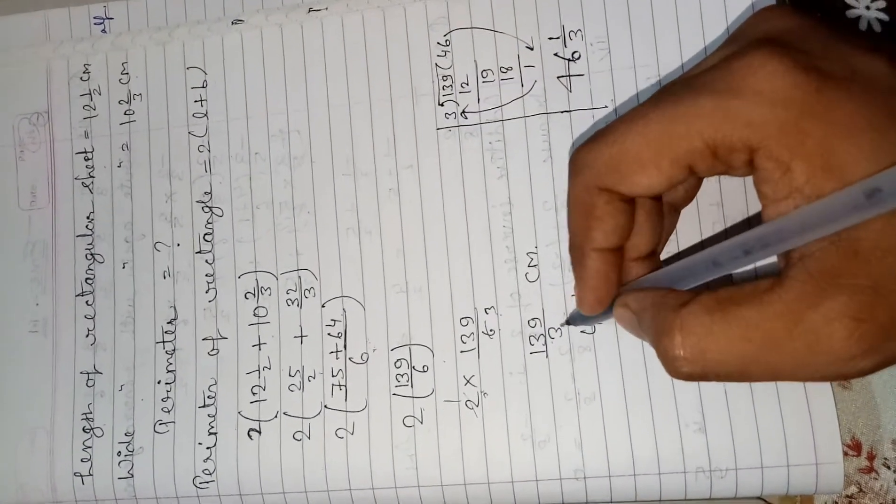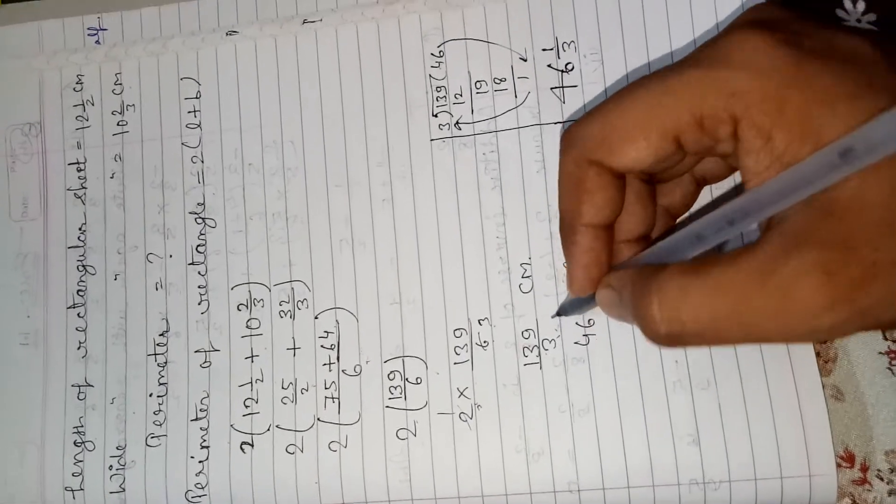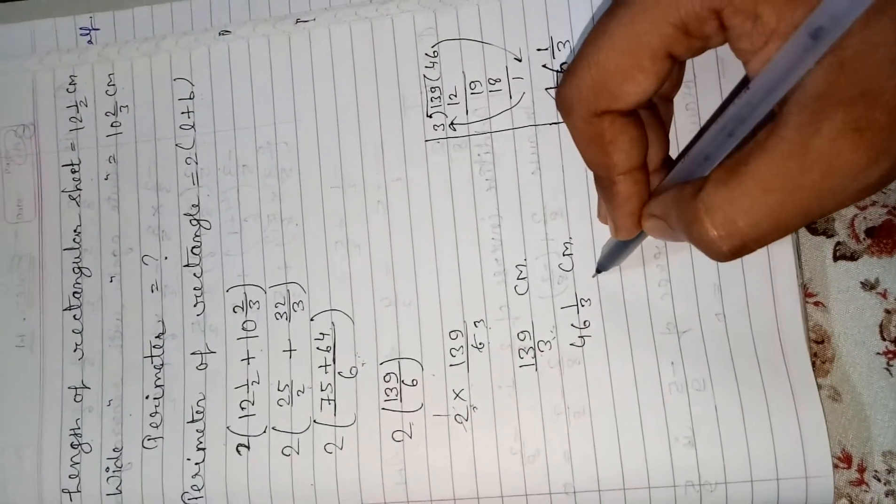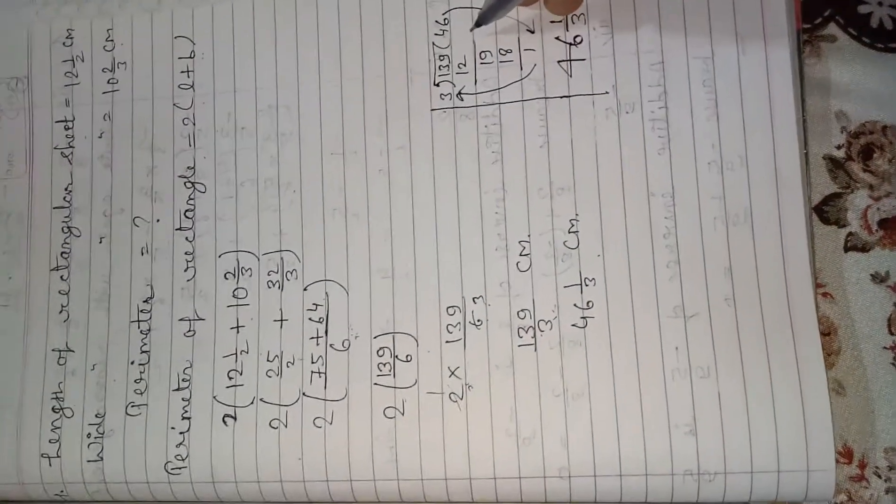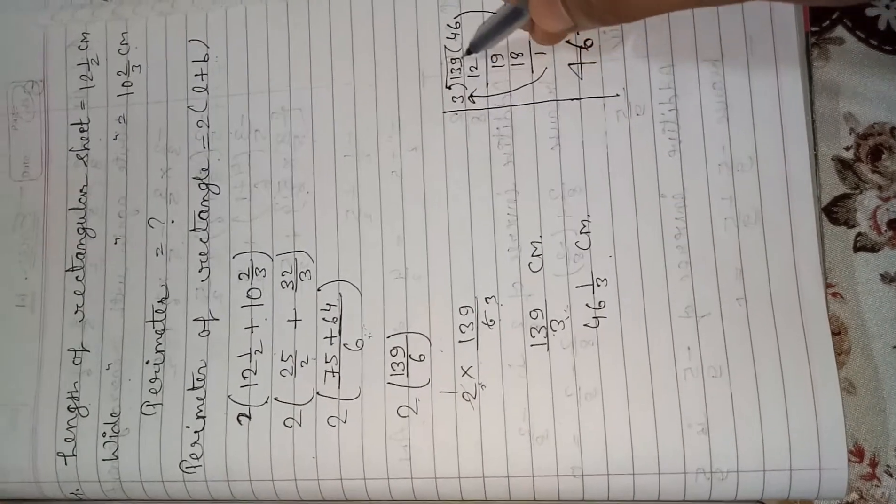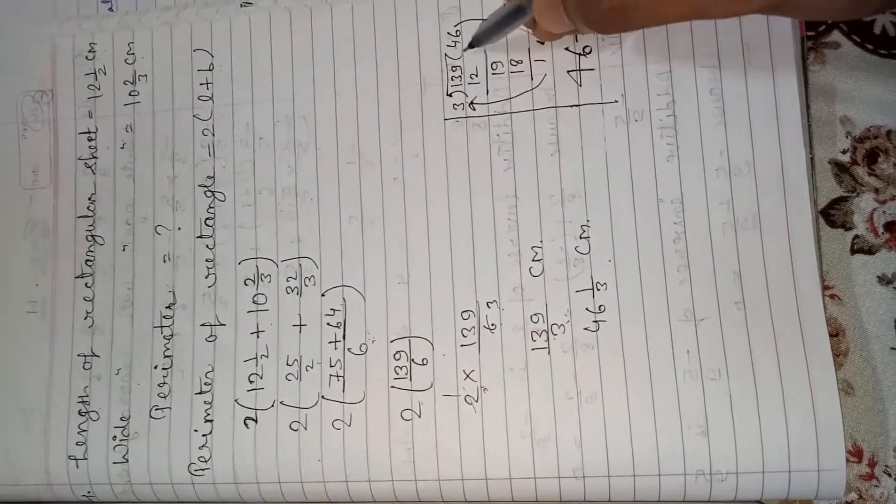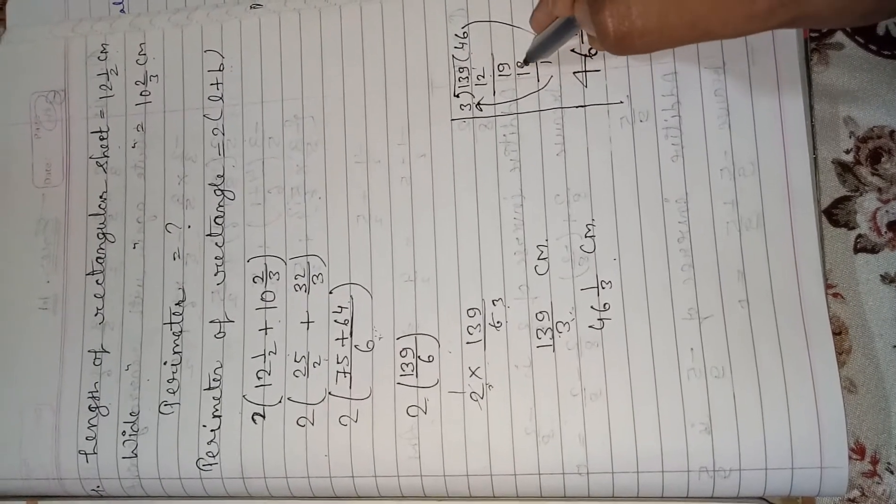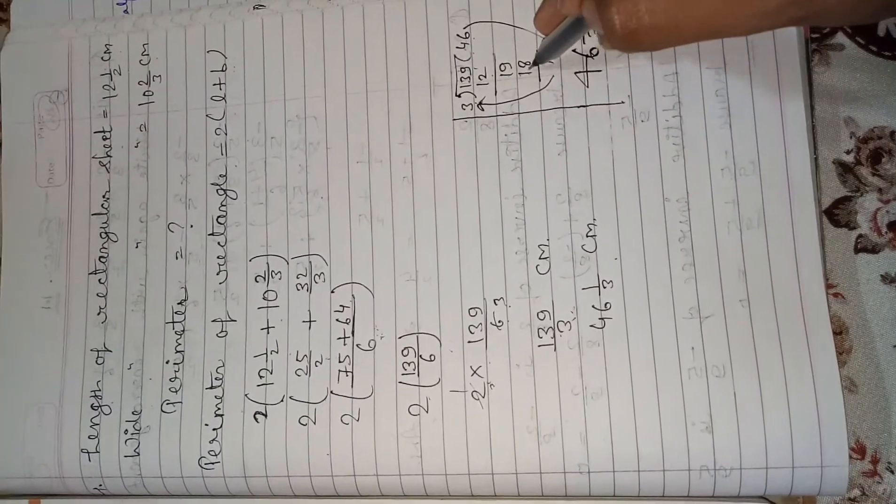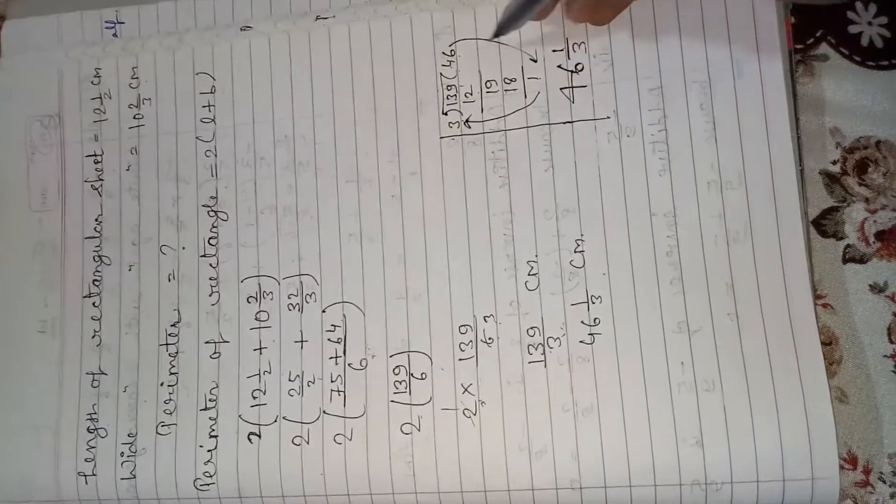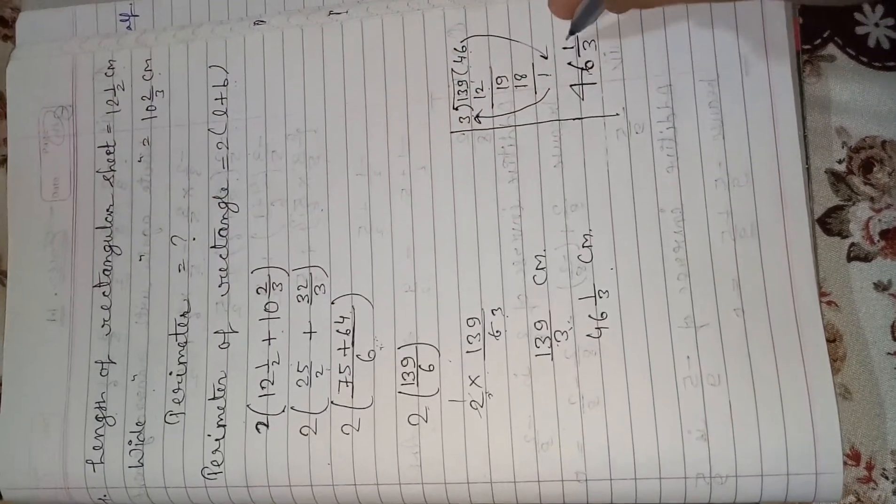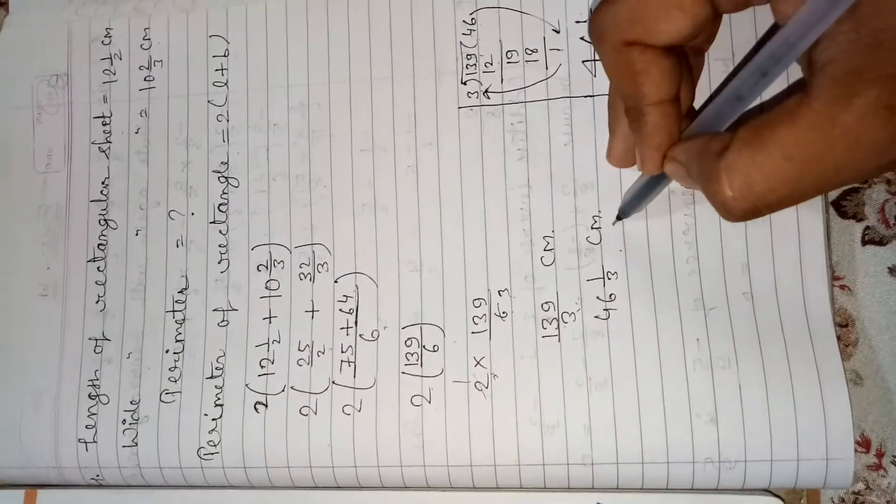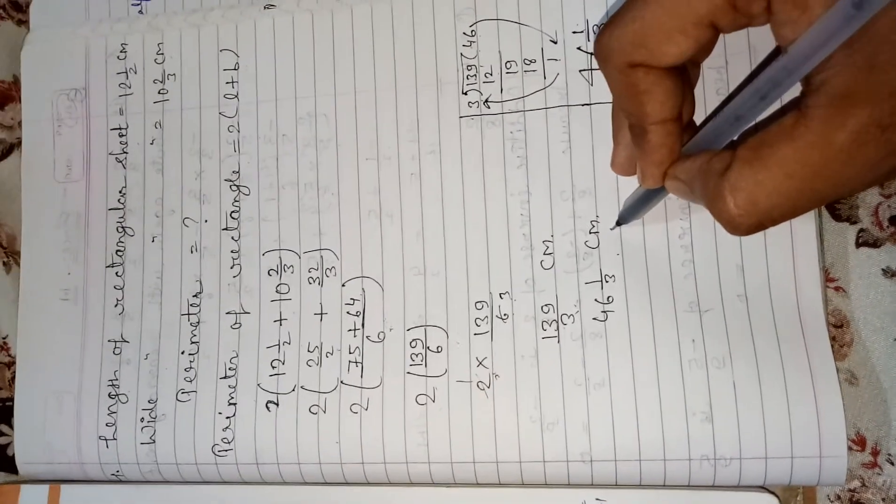This is an improper fraction. So we have to change into mixed fraction with the help of divide. 139 divided by 3. 3 fours is 12 upon remainder 1 upon 9. 3 sixes is 18 minus 1. So the answer is 46 and 1 upon 3. This is the perimeter of given rectangle sheet.